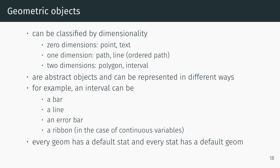Geometric objects can be classified by dimensionality. With no dimensions we have a point or text at some location. In one dimension we have a path or an ordered path which we call a line. In two dimensions we have a polygon or an interval. These are abstract objects represented in different ways. For example, an interval could be a bar, a line, an error bar, or a ribbon if the variable is continuous.